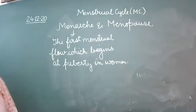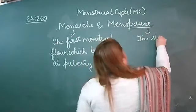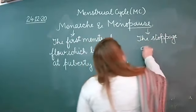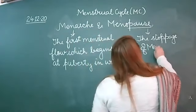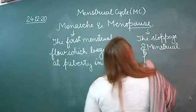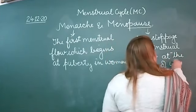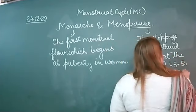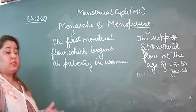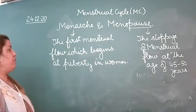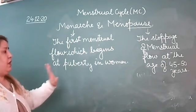And menopause means the stoppage of menstrual flow. The stoppage of menstrual flow occurs at around the age of 45 to 50 years in females. Menarche — the first menstrual flow — starts from around age 11 to 13 years at puberty. These two terms you have to note down.